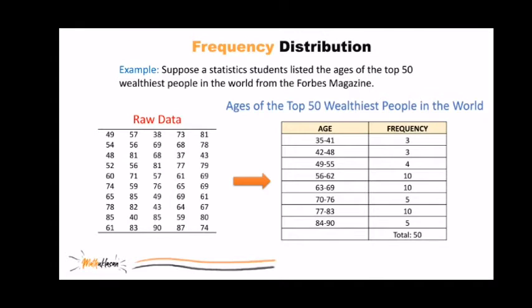In this example, 35 to 41 is called a class, and the set of intervals here is called classes. If we want to know the number of wealthiest people between the ages of 42 and 48, the answer is 3.